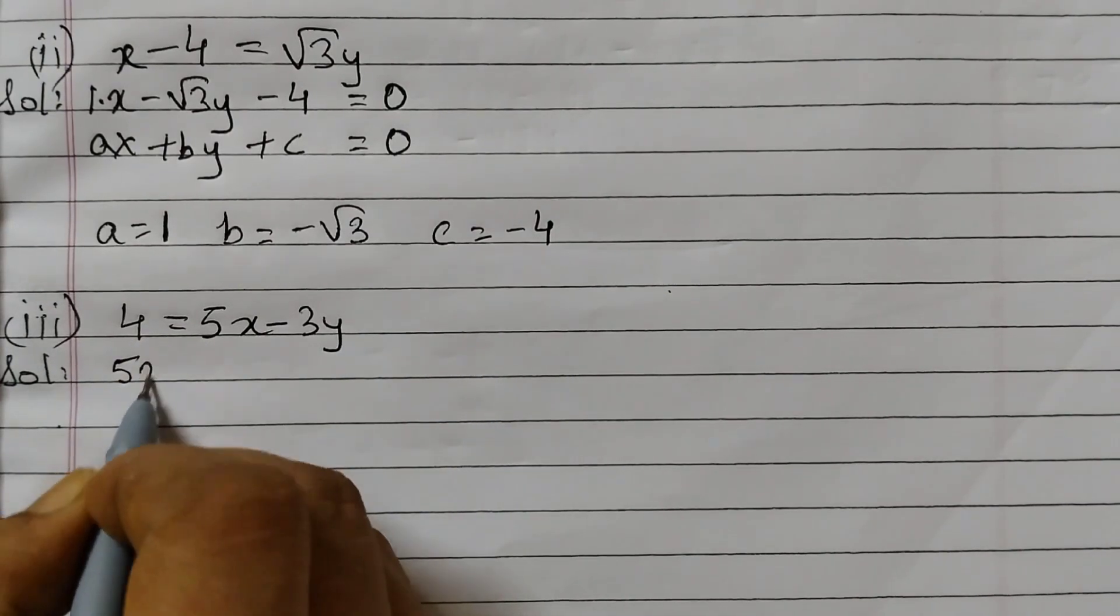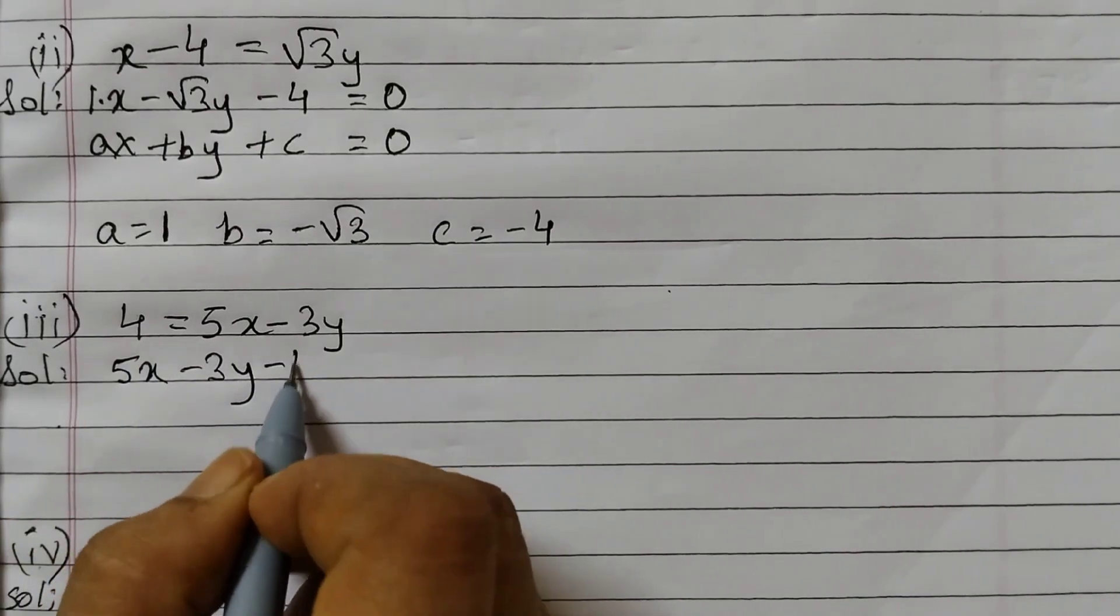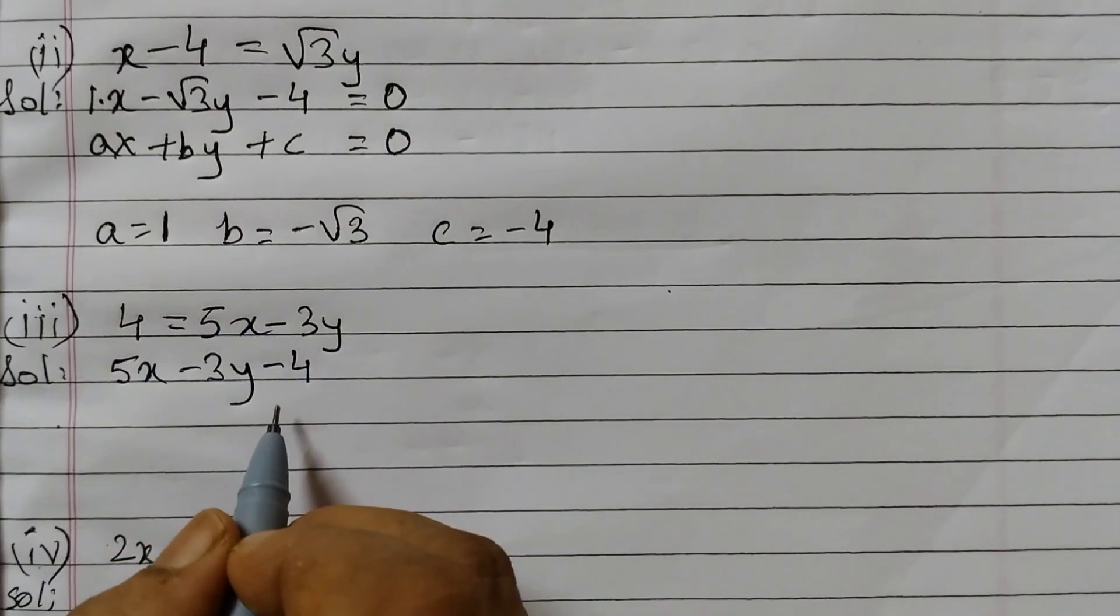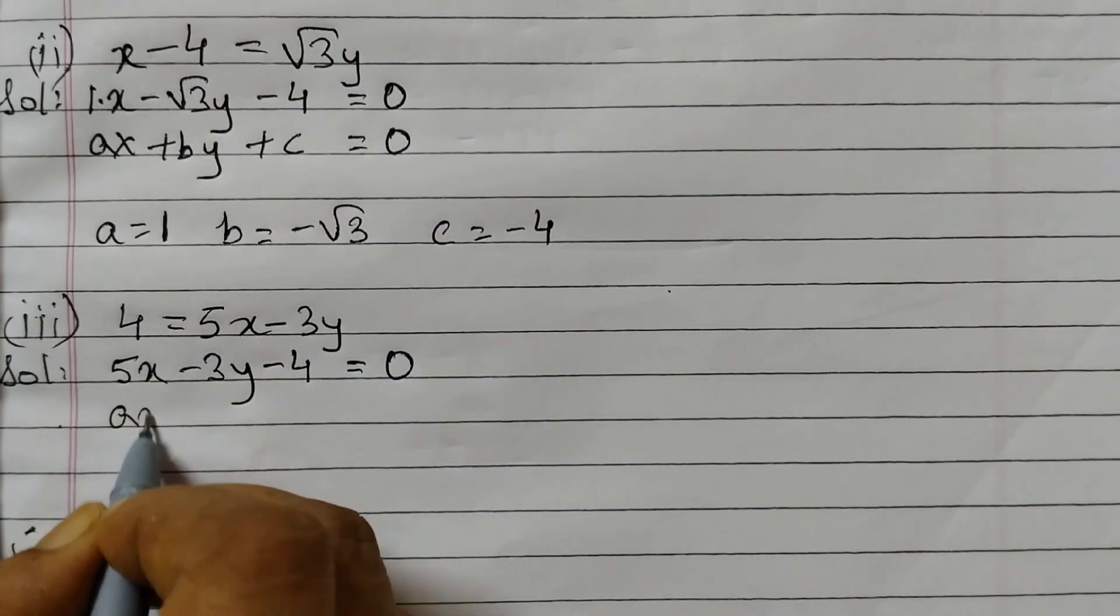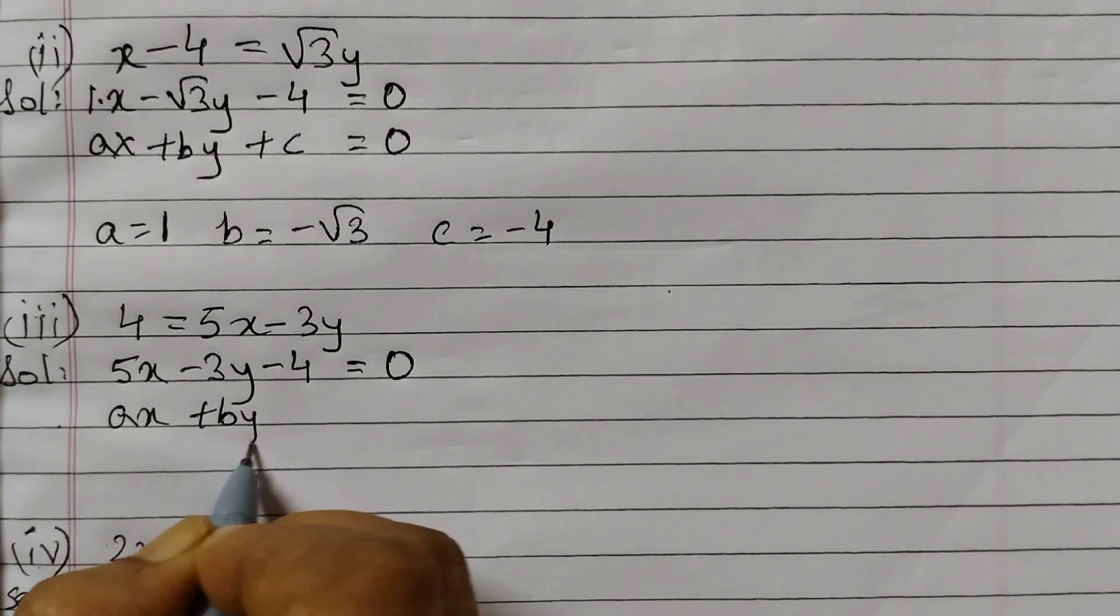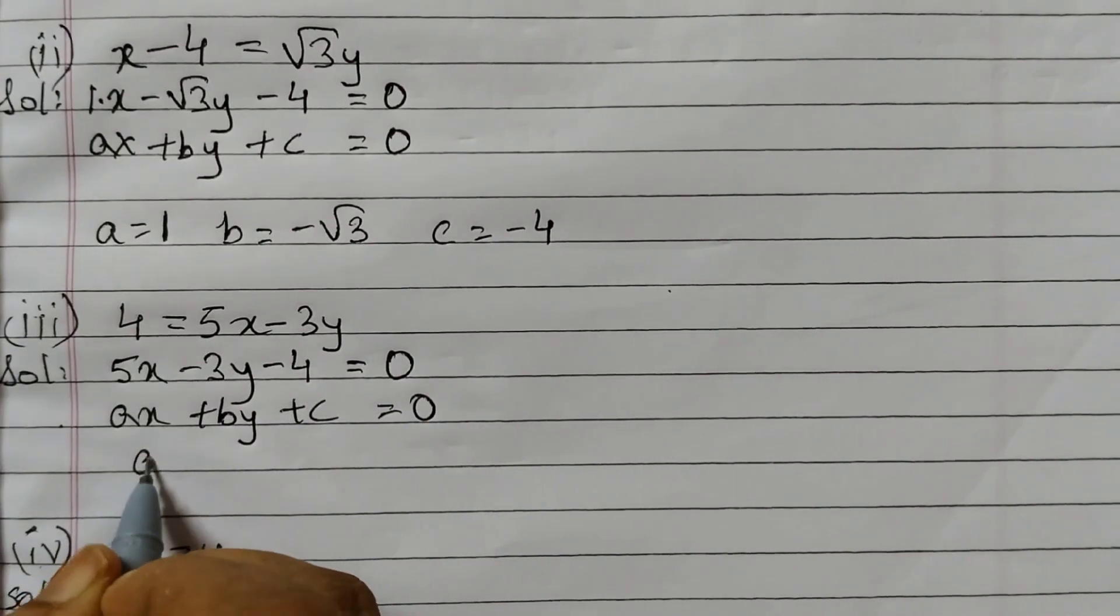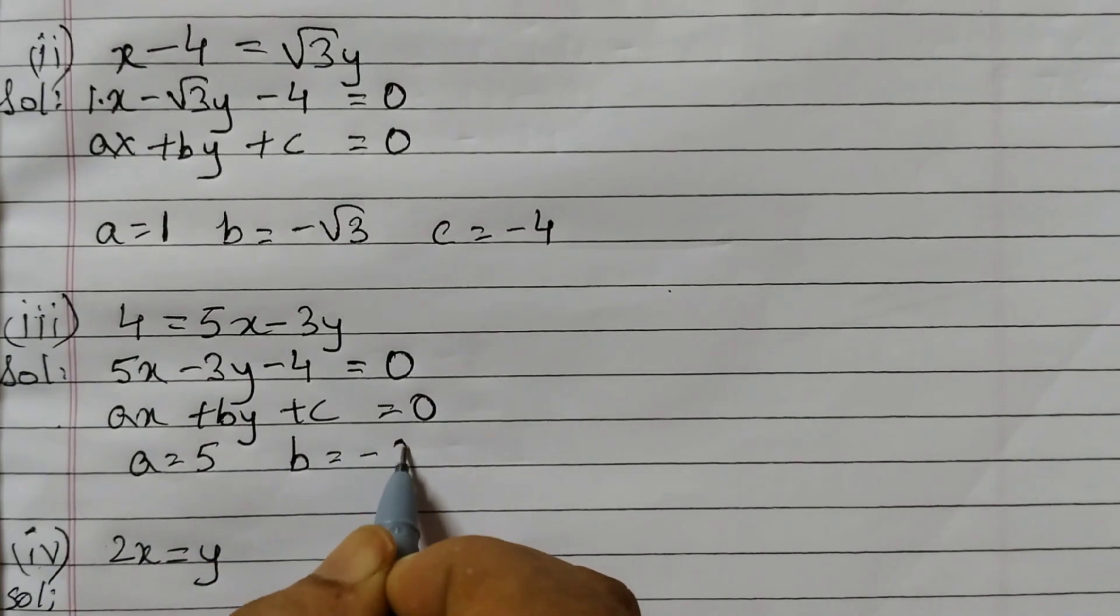So that will be 5x minus 3y and minus 4. Because this is positive 4, so when it moves to the other side, it becomes minus 4 equals to 0. Now compare ax plus by plus c equals to 0. So a is 5, b is minus 3, c is minus 4.